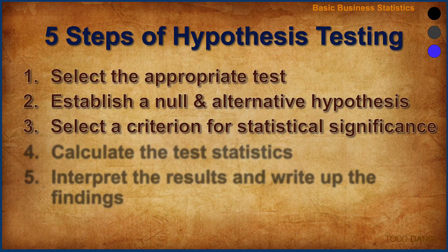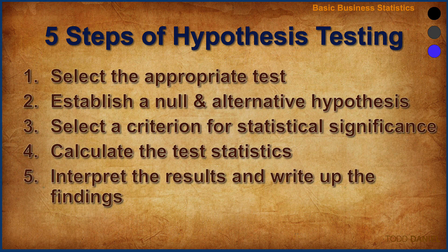Once we have worked through these first three steps, we are ready for step number four: calculate the test statistic, which we will do either by hand or using statistical software. Then we get to step five — we must interpret the test results and write up the findings. For every test that I teach you, I'm going to give you an example of how to write up the findings in APA style.